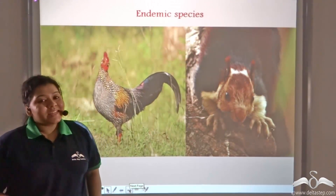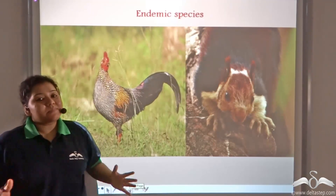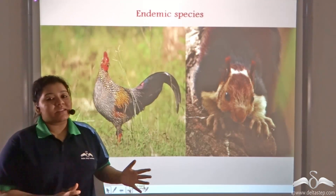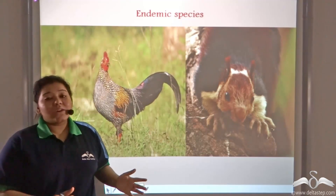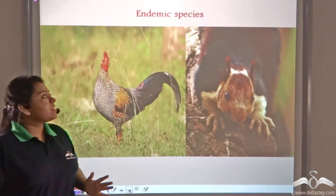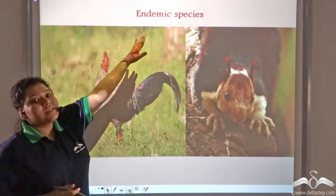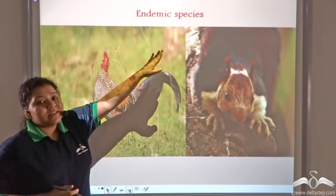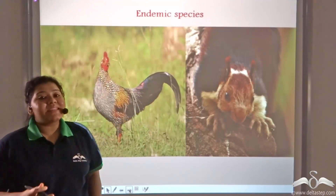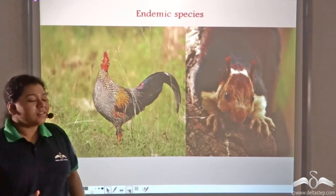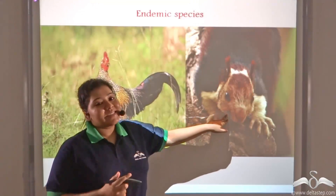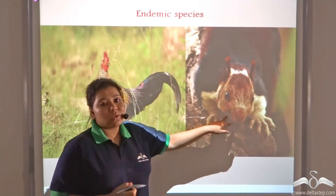These protected areas contain many species of animals that are found only in those areas and are not naturally found anywhere else. These species are known as endemic species, such as the grey jungle fowl found only in the forests of North India and the Malabar Giant Squirrel found only on the Malabar Coast.